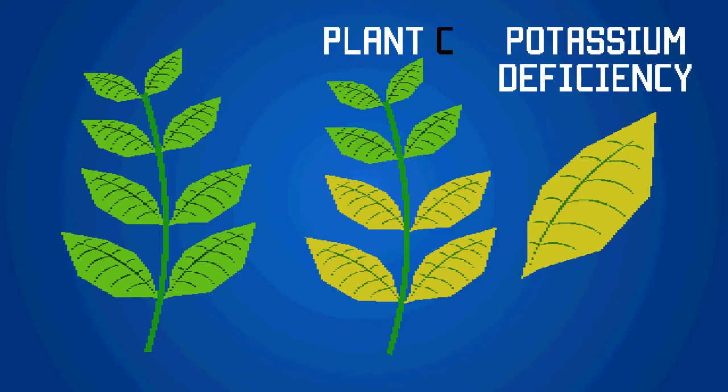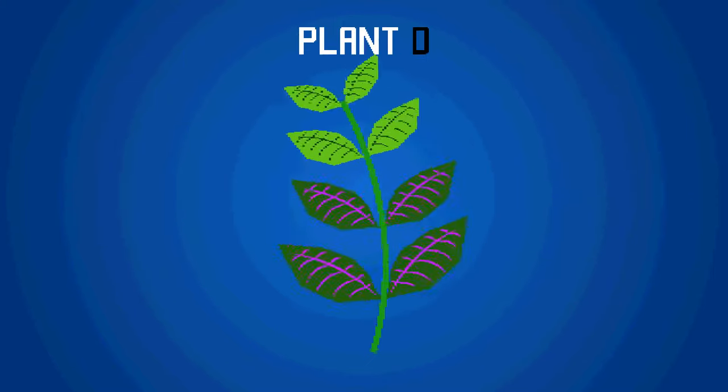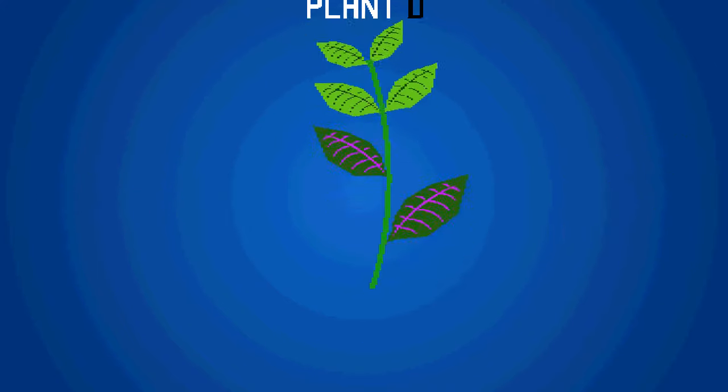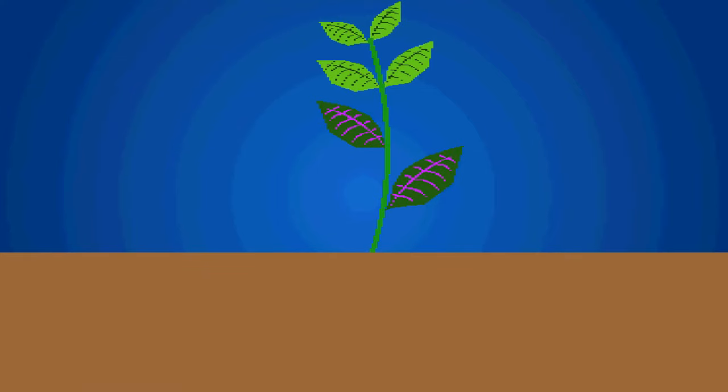Potassium is needed for growth and for the plant's immune system. Plant D has a phosphate deficiency. The older leaves are darker green and some have fallen off. Sometimes the veins become purple and the plant growth has been stunted. This is because phosphorus is involved in energy transfer, so the whole plant won't grow correctly, including the roots.